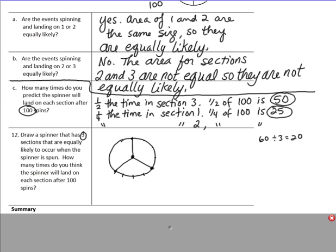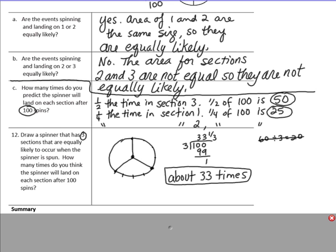How many times do you think the spinner will land on each section after 100 spins? If the circle is divided into 3 equal sections, it's equally likely to land in each. So we divide 100 by 3, which gives us 33 and a third — so about 33 times per section.